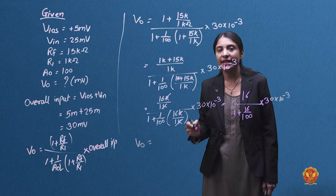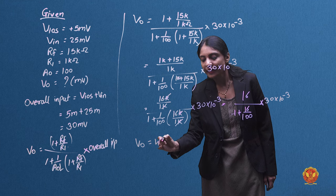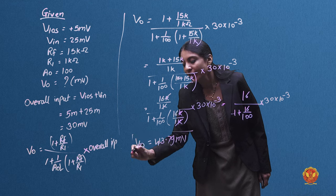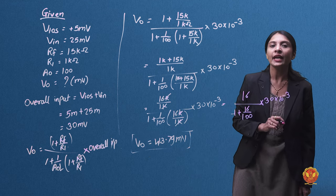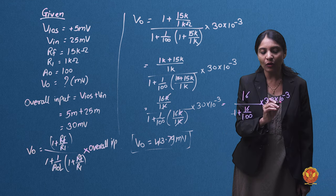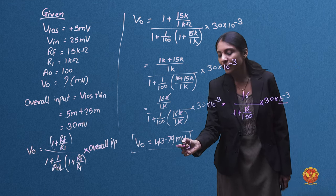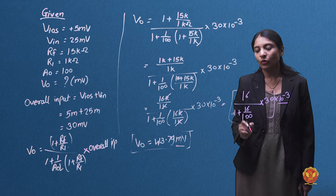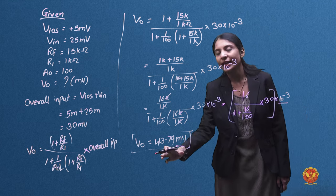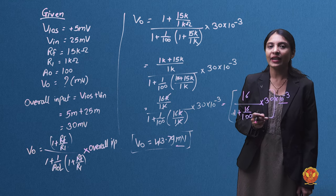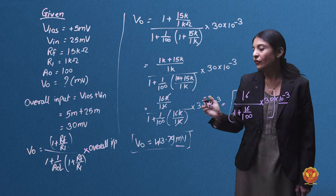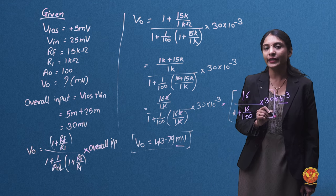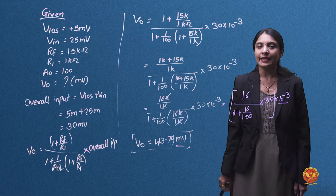Solving the equation, the final output voltage is 413.79 mV. The question asked for the output voltage in millivolts, so the answer is 413.79 mV.